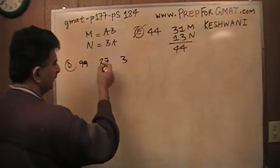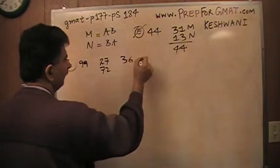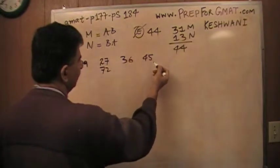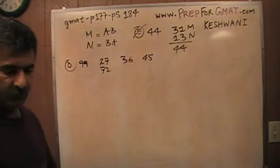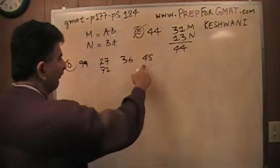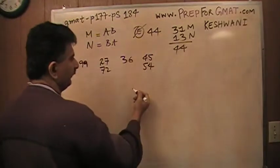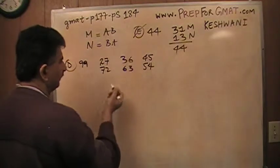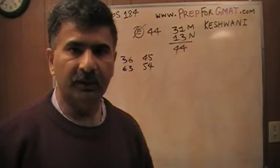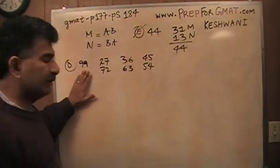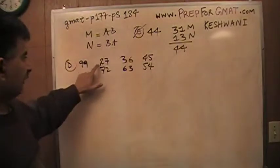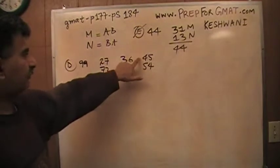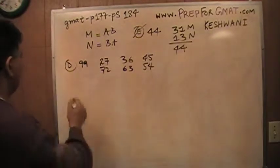So now I'm going to put 3 in the 10 digit. 3, 6, 4, 5. And then there is no point writing 5, 4 because 5, 4 would actually come over here. And then the 6 digit will come over here in the 10th place and so forth. So there are 3 possibilities. There are 3 possibilities where the sum of the digits could be 99, 27, 72, 36, 63, 45, 54. There are many possibilities.